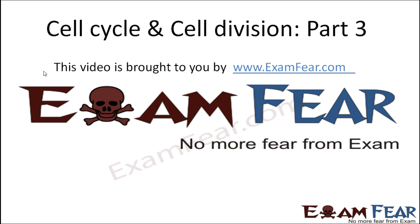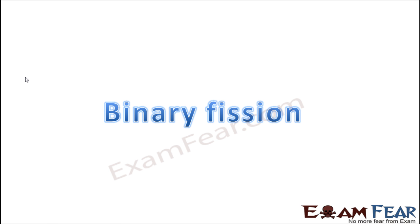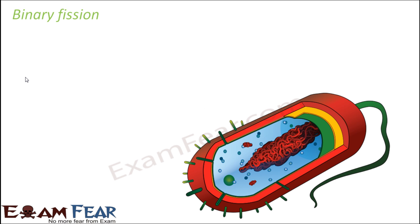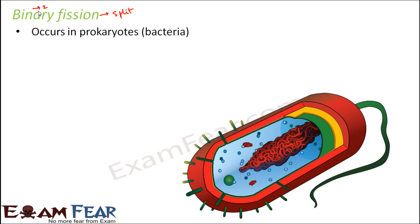This video on cell cycle and cell division part 3 is brought to you by examfew.com. Let us now talk about binary fission. The term 'binary' means two and 'fission' means to split — so binary fission means splitting into two parts. It occurs only in prokaryotes; for example, bacteria is one of the best examples.